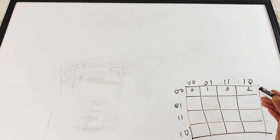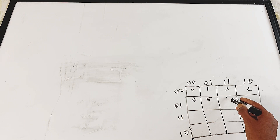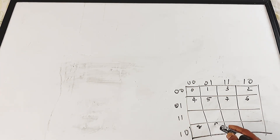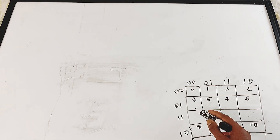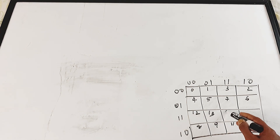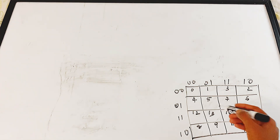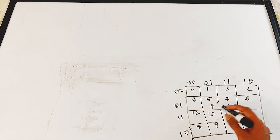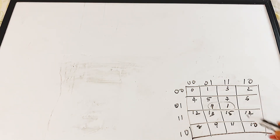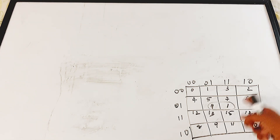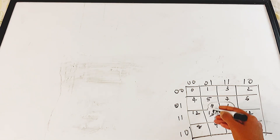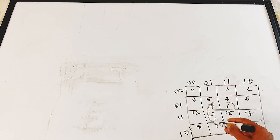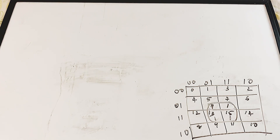In a four-variable K-map the positions are 0, 1, 3, 2 in the first row, then 4, 5, 7, 6, then 8, 9, 11, 10, then 12, 13, 15, 14. If you group two ones together it is called a pair. If there are four ones grouped together it is called a quad. If there are eight cells grouped together it is called an octet. So pair, quad, and octet are the K-map groupings.